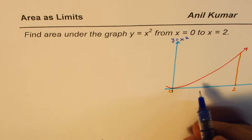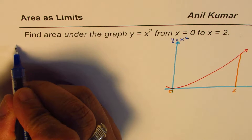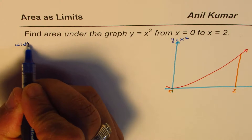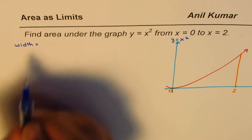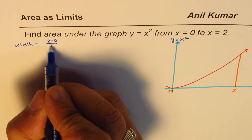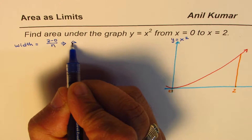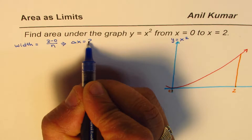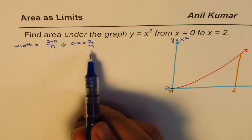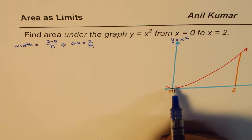If we divide this into n intervals, the width of each interval is (2 − 0) divided by n. So we can say delta x = 2/n. The idea is that if n is very large, the sum of the areas of the rectangles will approach the area under the curve.